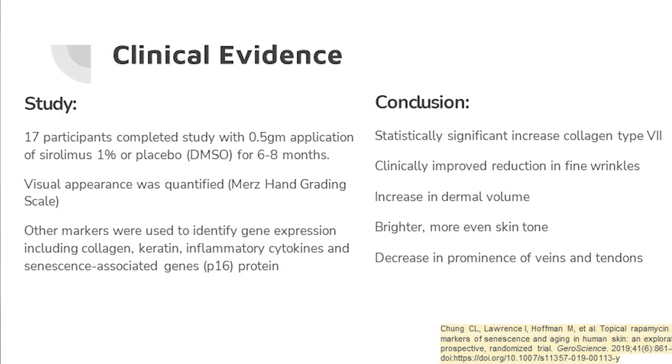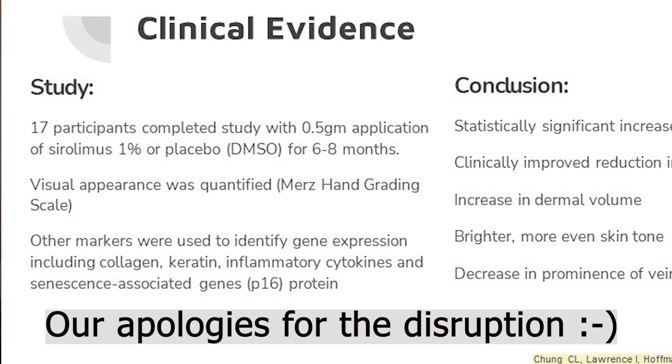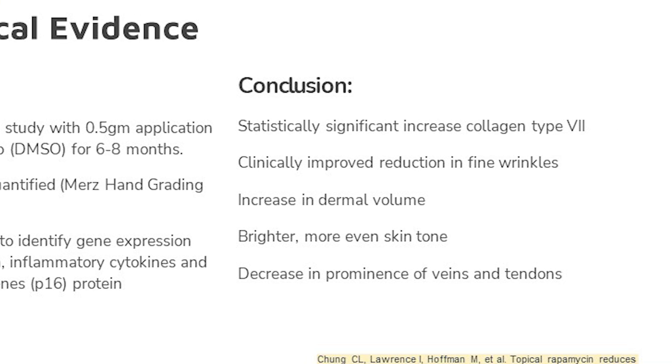As far as clinical evidence, I have snippets from a few different studies giving validity to the idea that topical rapamycin or sirolimus, as a topical mTOR inhibitor, can be beneficial for photoaging — both visually and on a molecular level. This study had 17 participants using a half gram application of 1% sirolimus or placebo cream for six to eight months. The conclusions found a statistically significant increase in collagen type 7, clinically improved reduction in fine wrinkles, increased dermal volume, brighter and more even skin tone, and decreased prominence of veins and tendons.